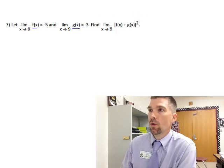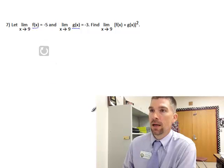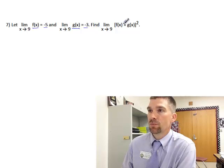They tell us what those limits are. That limit is -5 here and -3 here. We want to know the limit of f(x) + g(x) squared.